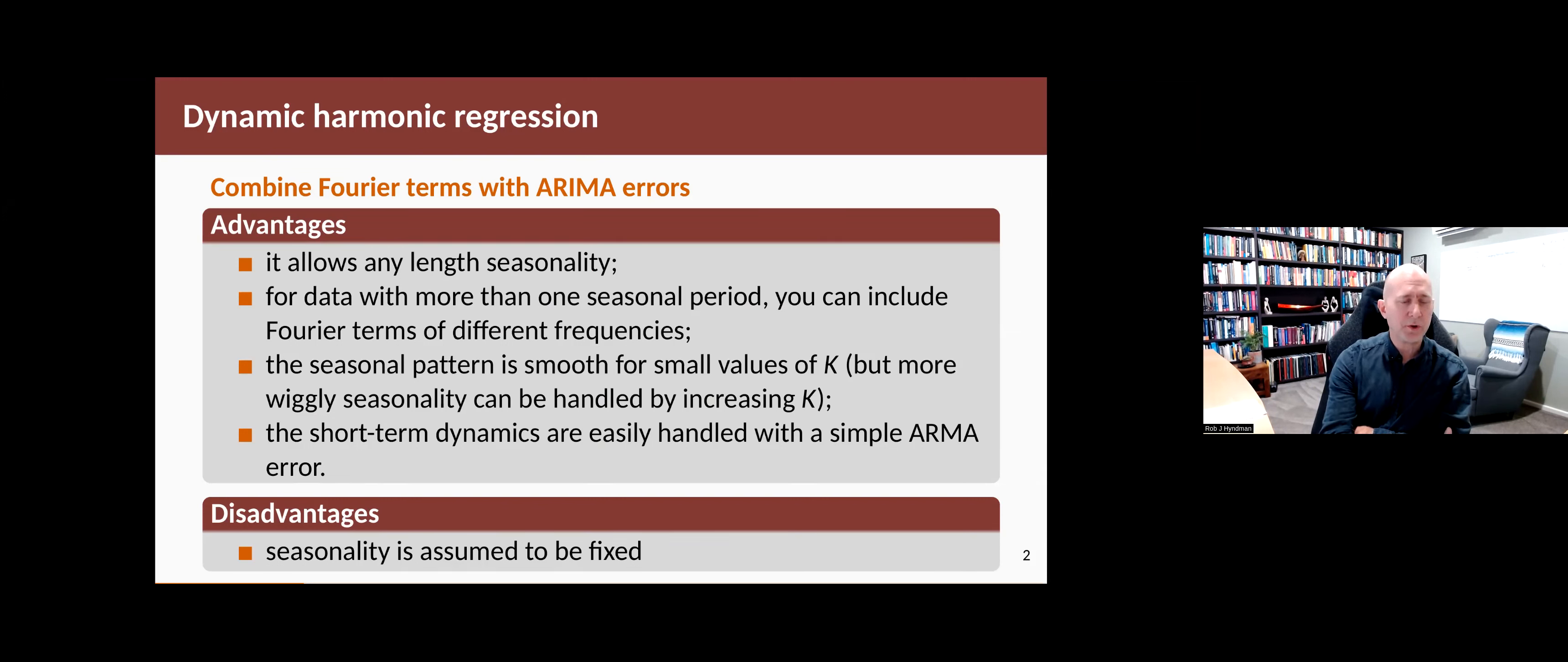It means that the seasonal pattern is smooth, which sometimes is useful. The main disadvantage of using Fourier terms in a regression or a dynamic regression model is that it assumes the seasonality is fixed and unchanging. And if you want the seasonality to change over time, then you can't deal with it directly using Fourier terms like this.